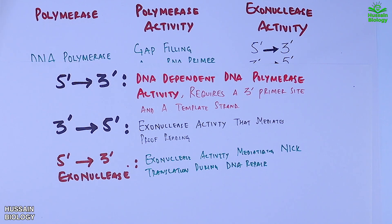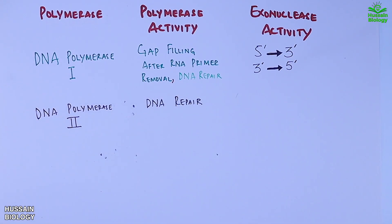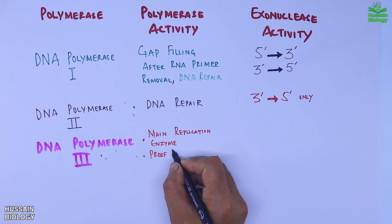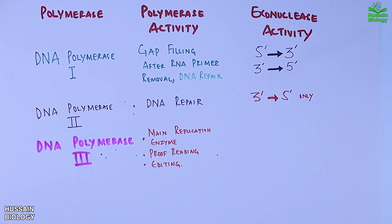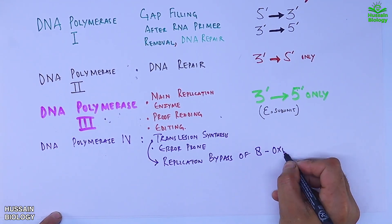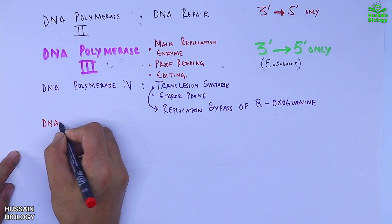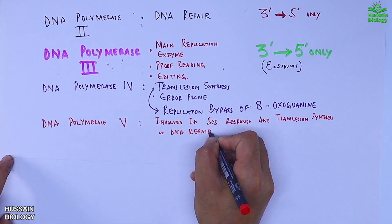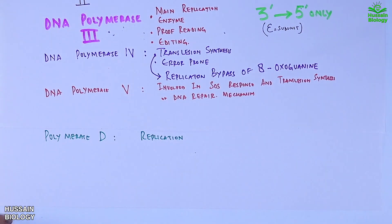Now getting to polymerase 2, which drives DNA repair mechanisms and has only 3' to 5' exonuclease activity. And finally we have polymerase 3, which is the main replication enzyme that drives DNA replication, proofreading, and some editing processes. This enzyme also has only 3' to 5' exonuclease activity, shown by the epsilon subunit of DNA polymerase 3. Then we have DNA polymerase 4, which drives translesion synthesis due to replication bypass of 8-oxoguanine. DNA polymerase 5 is involved in SOS response and translesion synthesis during DNA repair. And finally we have polymerase D, which mediates DNA replication in a few archaea.